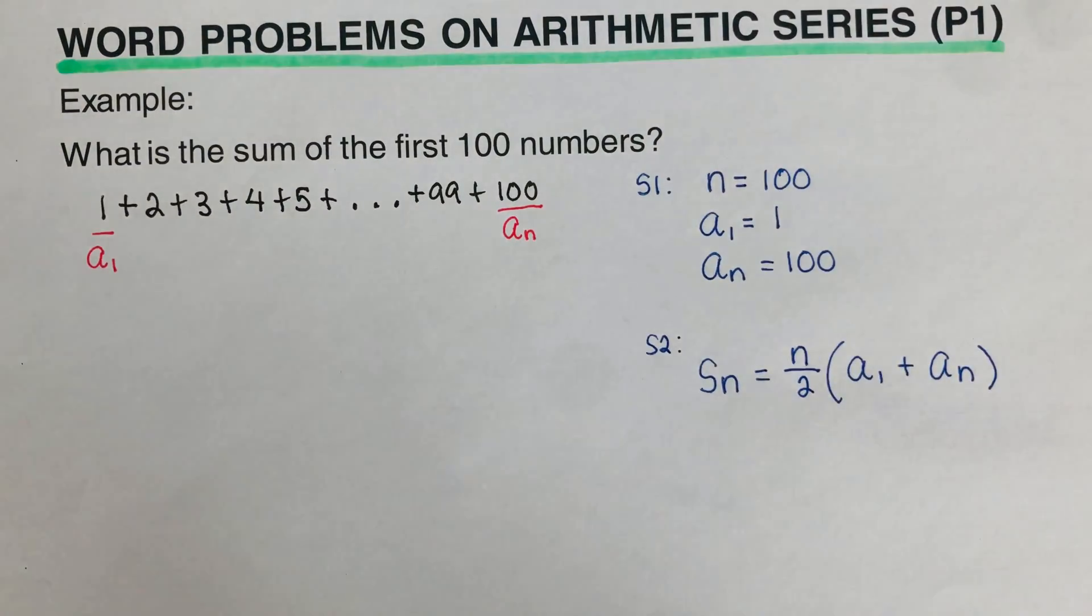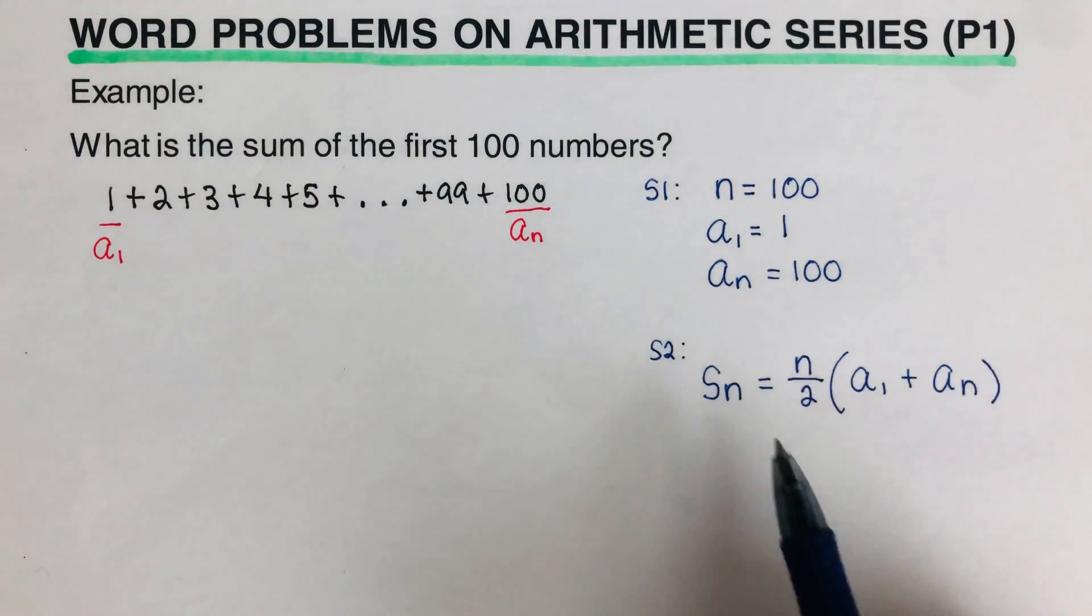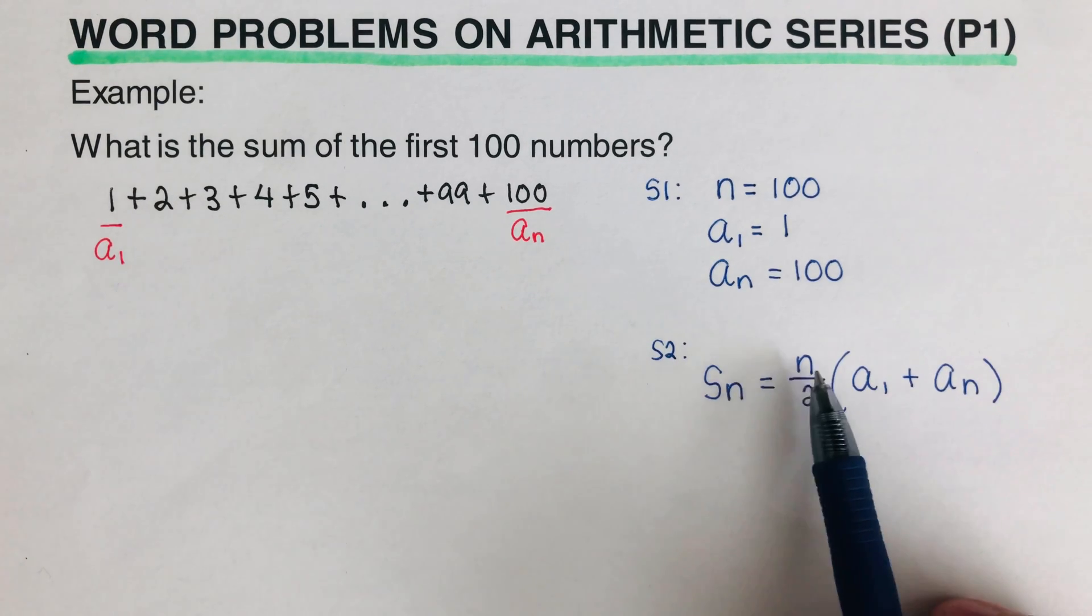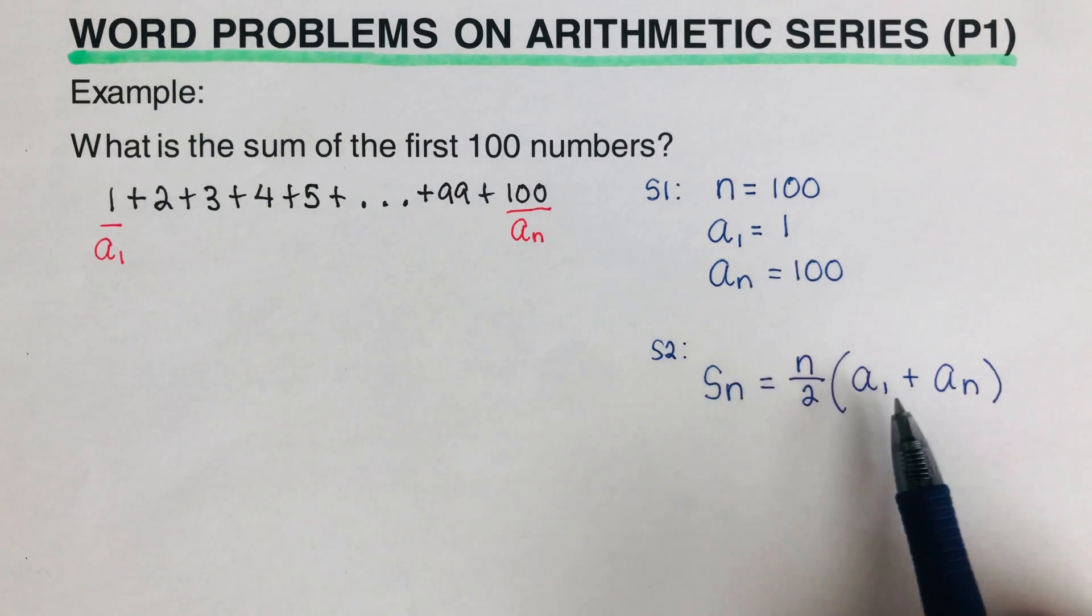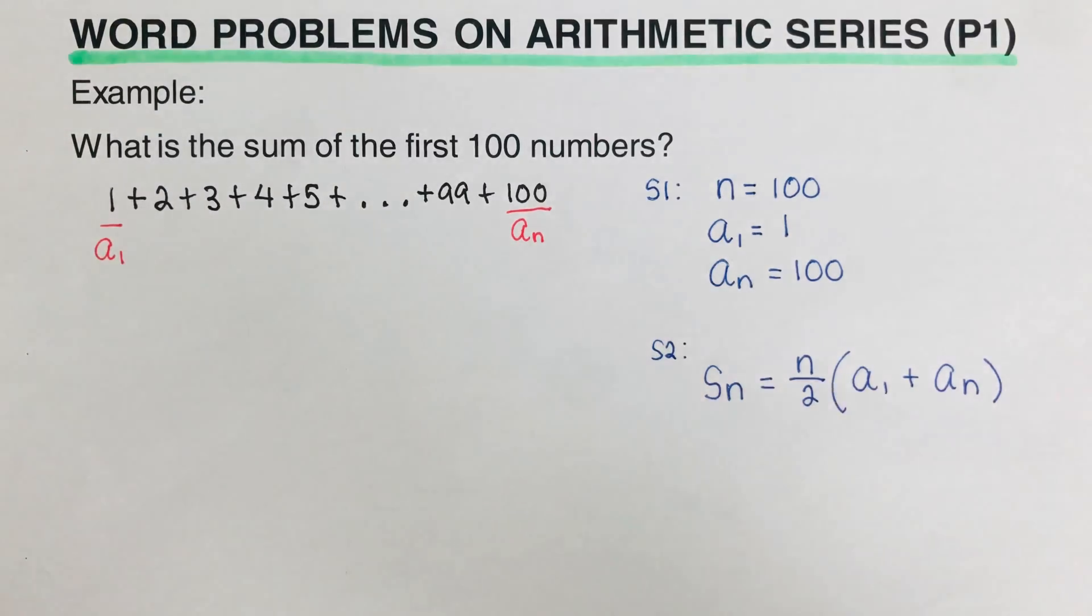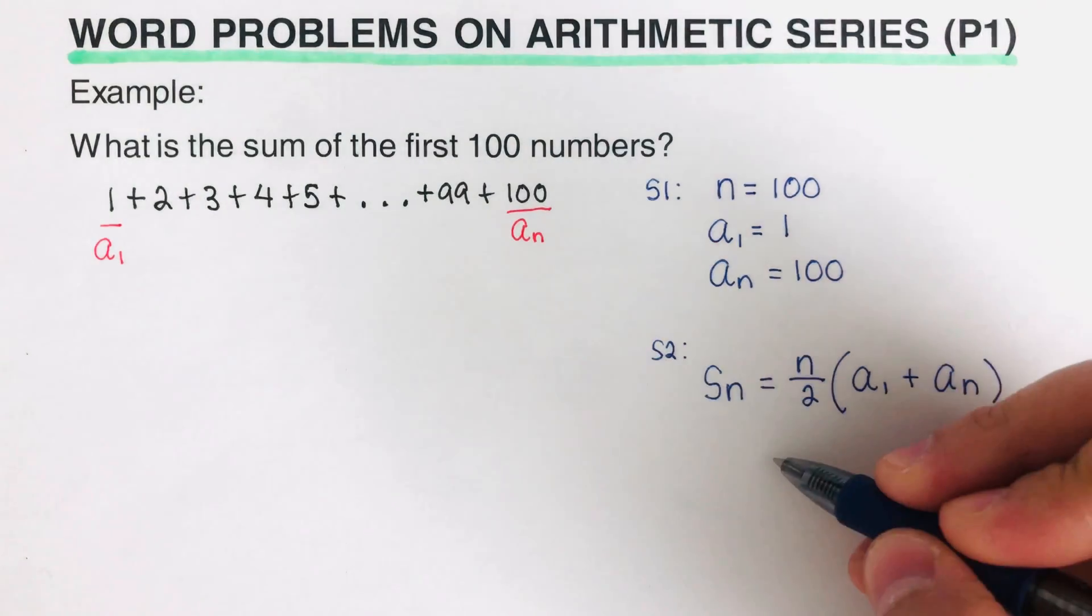Okay, so this is the formula to find the sum. S sub n, which is the sum, is equal to n, that's the number of terms, over 2, times the sum of the first term a sub 1 and the last term a sub n. So we plug the values into the formula to find the sum.